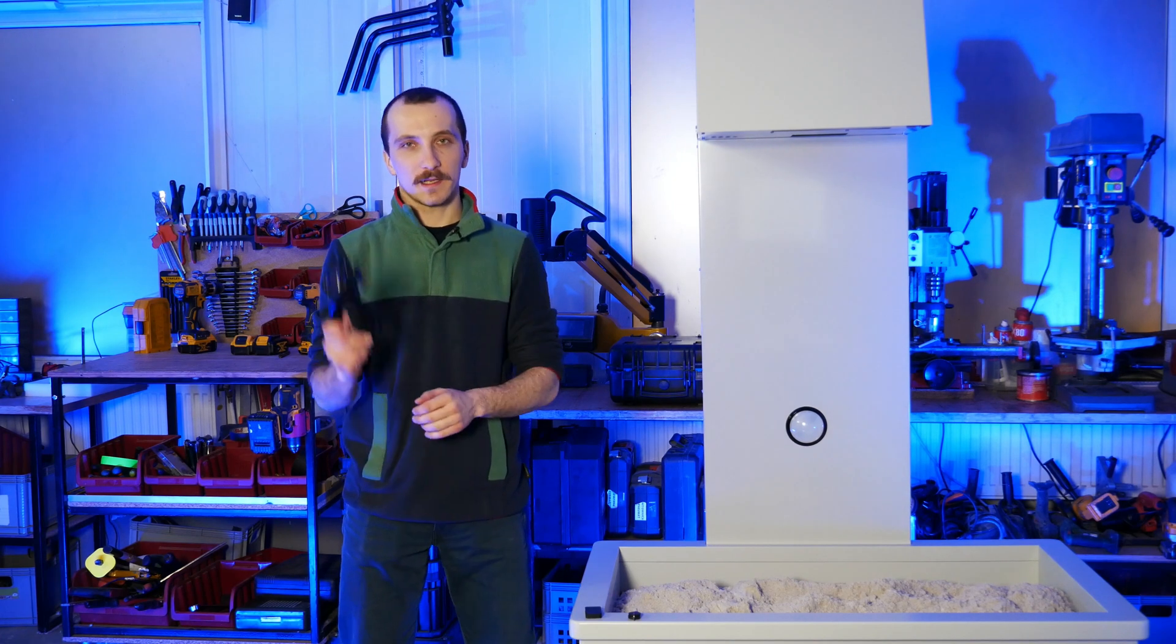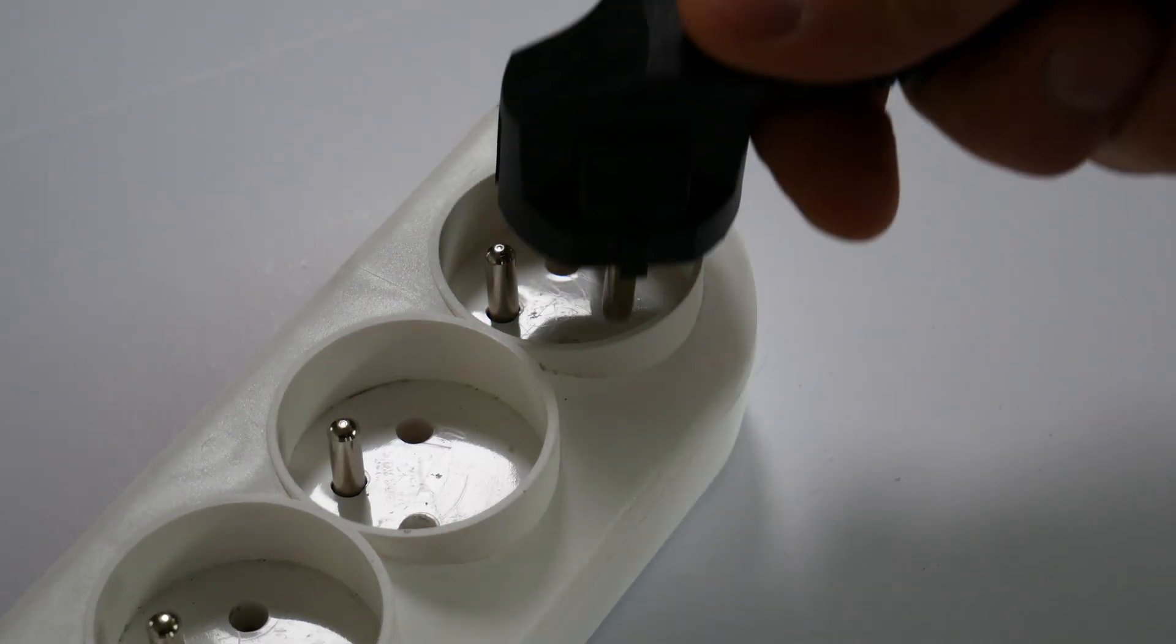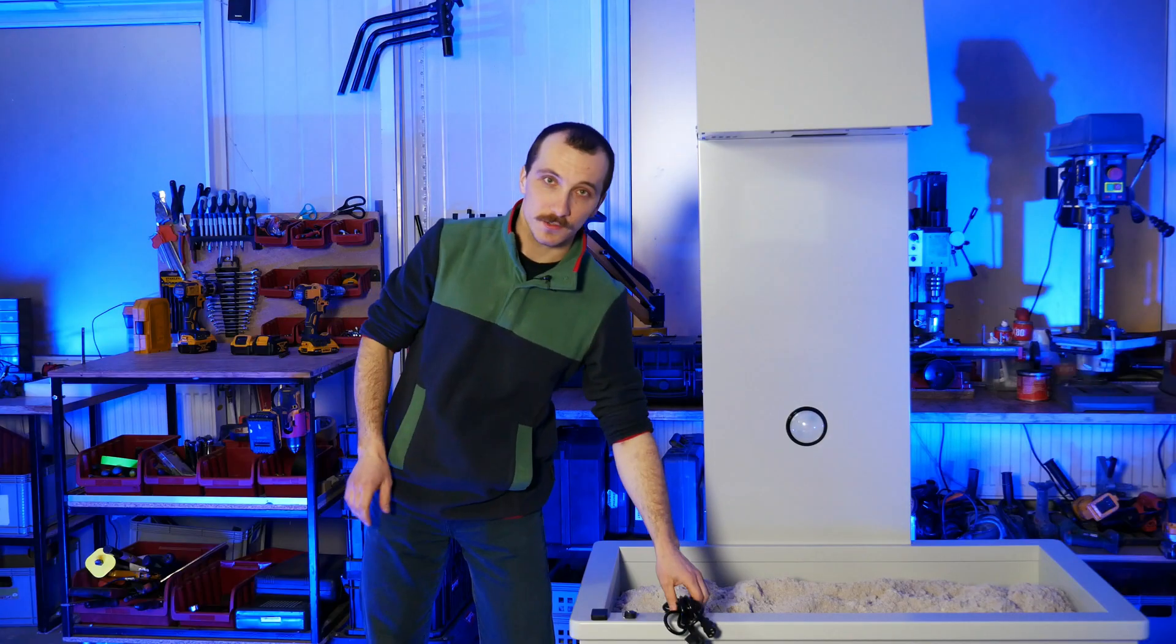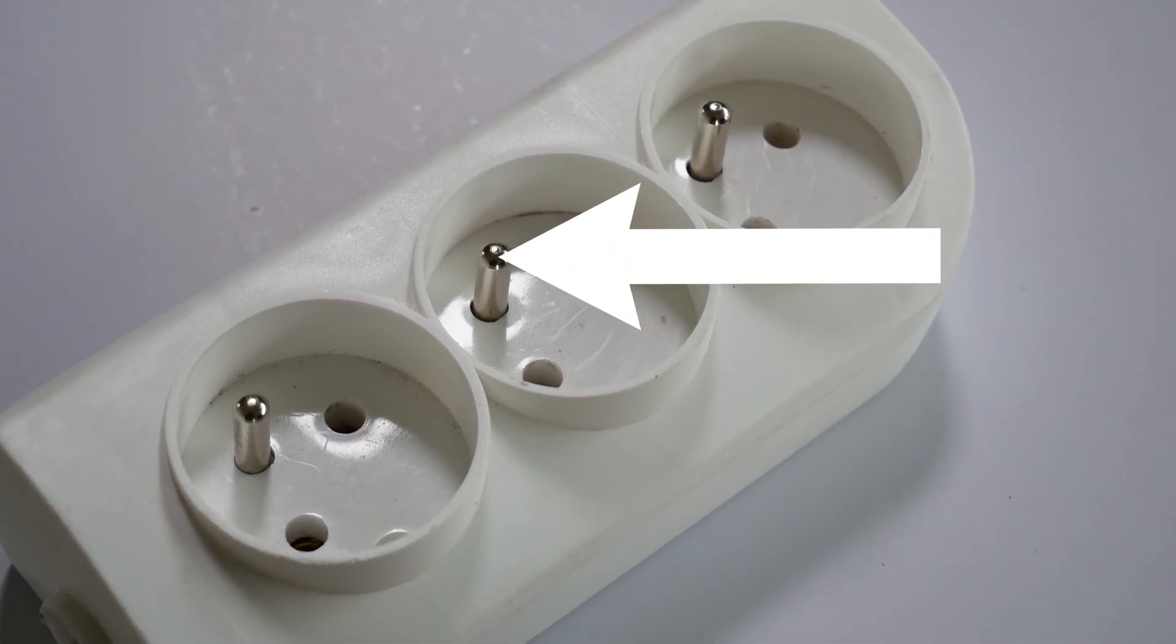Before powering the unit on, plug the power cord into the socket on the back panel and to an electrical outlet. Always choose a grounded outlet. When using an extension cord, make sure it has the ground wire as well.